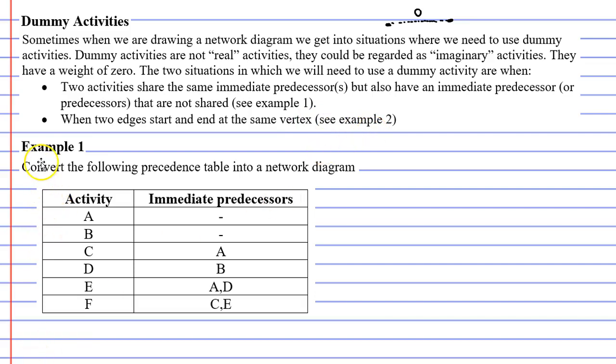So we'll start with example one. It says convert the following precedence table into a network diagram. We can see we've got two activities, activities A and B, which don't have any immediate predecessors. So we'll put down our start vertex, label it as our start, and we'll have both activities A and B coming out from this vertex. So that's A and B completed.